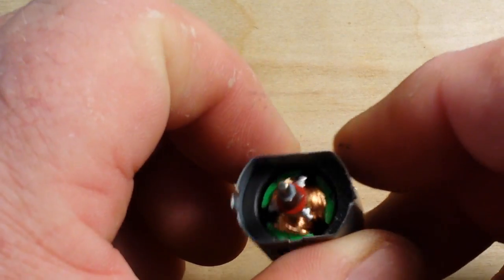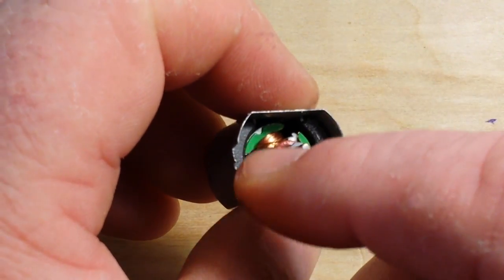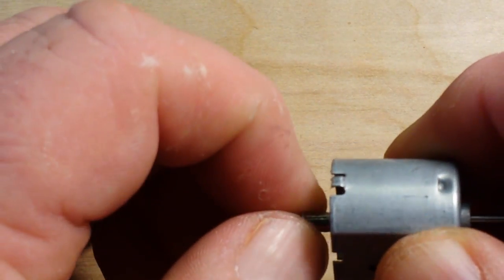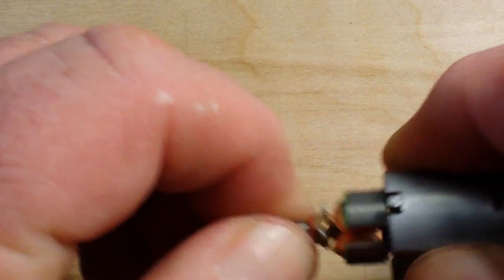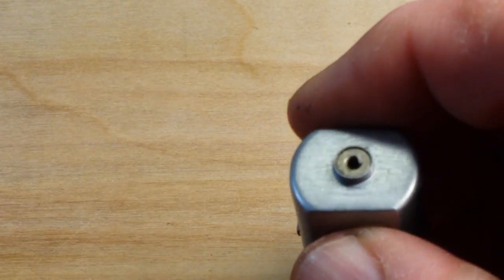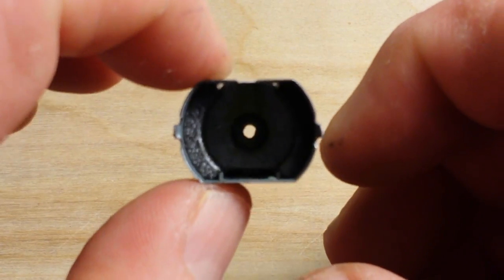But basically what happens here is we get these three phases of this motor turning and that's about all she wrote. I mean there's a little, well I don't think in this case it's even a bearing. It's just a bushing.